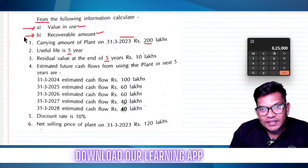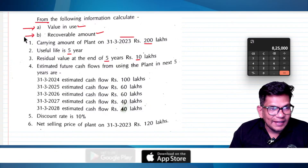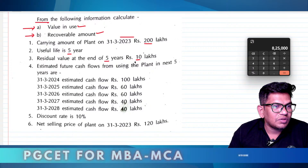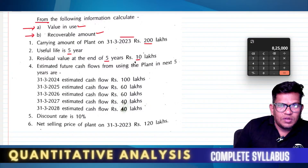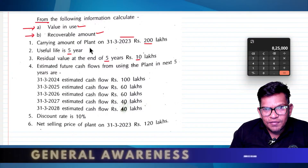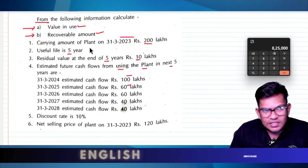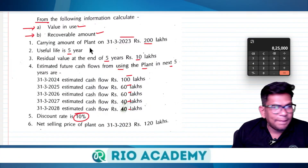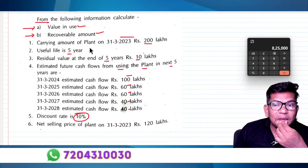The residual scrap value at the end of 5 years is 10 lakh. The estimated future cash flows from the use of the plant for the next 5 years are: 100, 60, 60, 40, 40 lakh. The discount rate is 10%. The net selling price of the plant is 120 lakh.